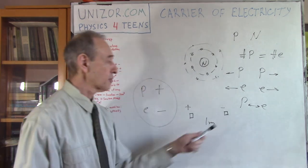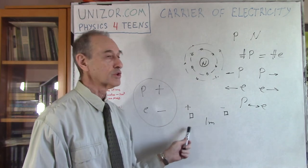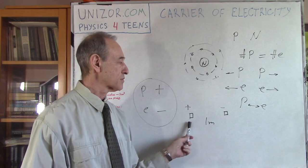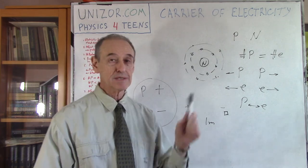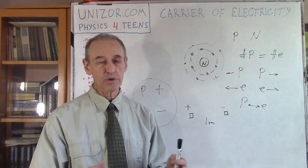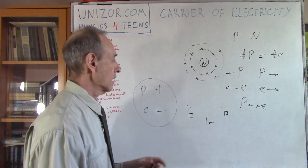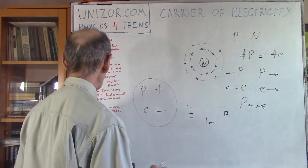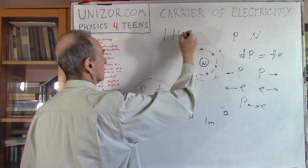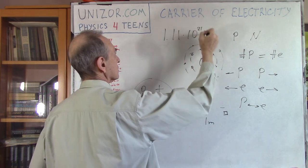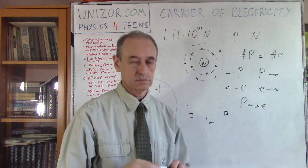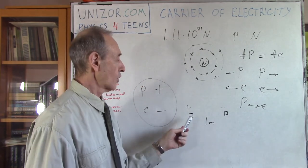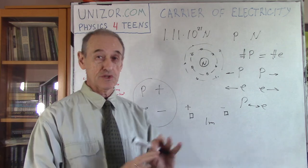These are comparable forces. The force between two cubic centimeters of iron — in the case where we strip all electrons from one to the other — is about the same order as the force which holds Mars on its orbit. So it's huge, actually. I have a number: it's 1.11 times 10 to the 21st Newtons — 10 to the power of 21. That's huge.